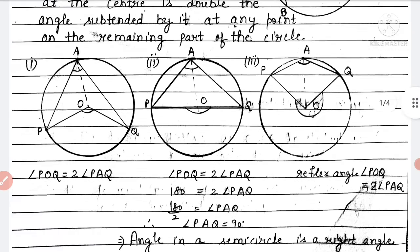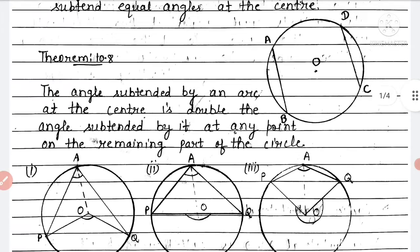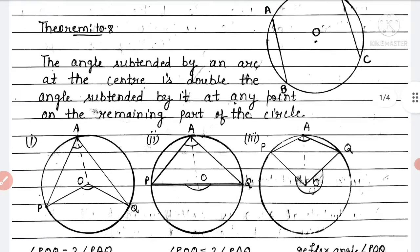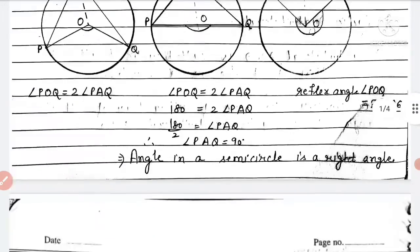So in Theorem 10.8, we discussed three cases: minor arc, diameter (semicircle), and major arc. In all three cases, the angle at the center is double the angle formed on the remaining part of the circle.